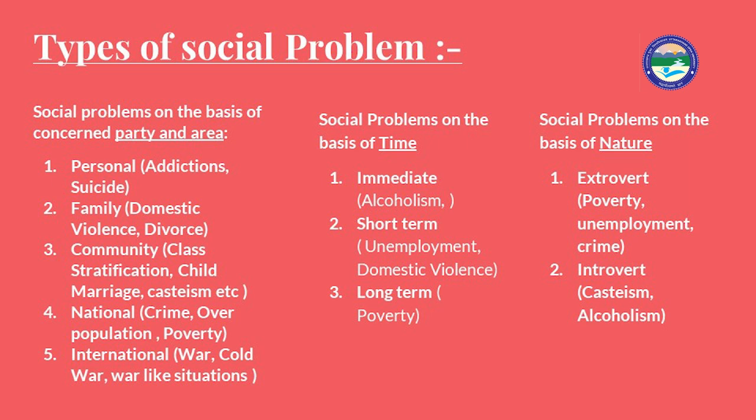Thirdly, social problems based on their nature are categorized as extrovert or introvert. Extrovert problems such as poverty, unemployment, and crime are visible in society and reported in everyday news. Introvert problems such as casteism, alcoholism, and regionalism are more hidden in nature.